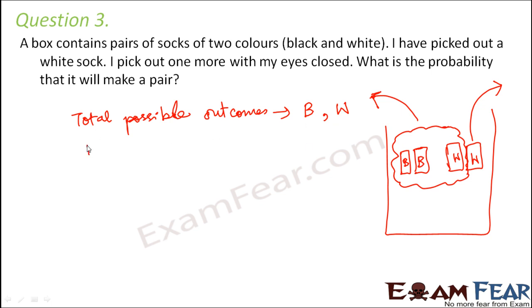So the total number of possible outcomes is two and the probability of getting a white sock is one out of total number of possible outcomes which is two. Therefore the probability of getting a white sock would be one by two.